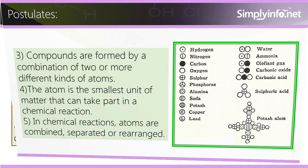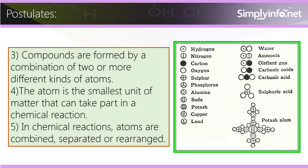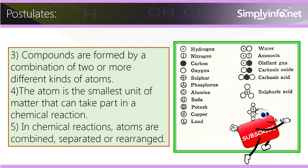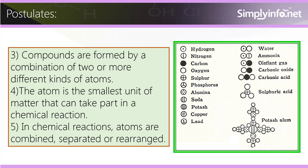Number three — compounds are formed by a combination of two or more different kinds of atoms. Number four — the atom is the smallest unit of matter that can take part in a chemical reaction. Number five — in chemical reactions, atoms are...